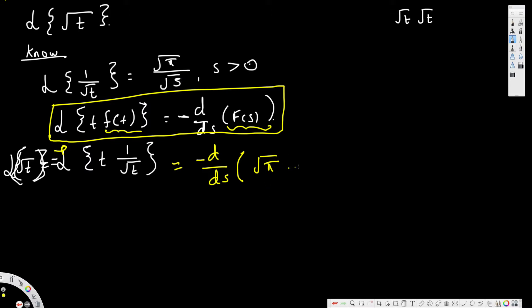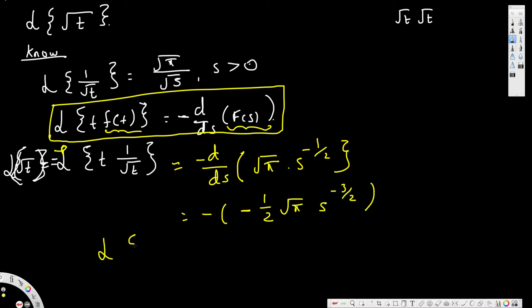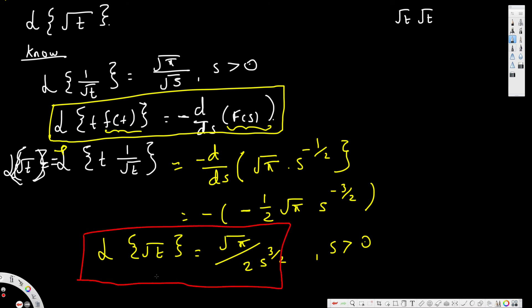Square root of s is s to the power of one half; bringing it to the top gives s to the power of negative one half. Now we differentiate with respect to s, giving negative times square root of pi times negative one half times s to the power of negative 3 over 2. Therefore, the Laplace transform of square root of t is square root of pi divided by 2s to the power of 3 over 2, where s must be greater than 0. That's our final answer — I hope you find this video helpful, thanks for watching and see you next time.